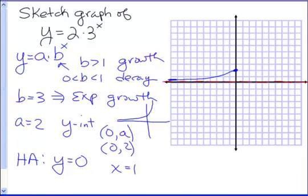This value is easy to calculate. To calculate y we substitute in for x: 3 to the first power is 3, and 2 times 3 is 6. So we have the point (1, 6) that we can add to our graph. Now we can see that we're bending up sharply so we can continue our graph.